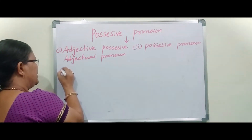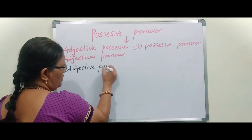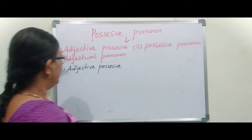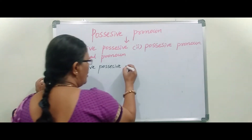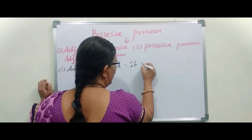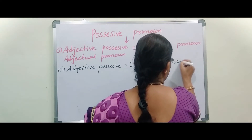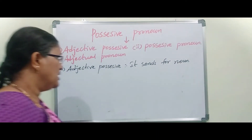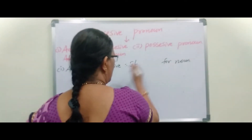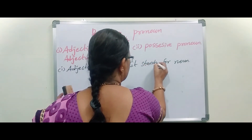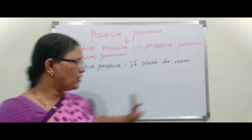Let us look at the first one: Adjective Possessive. Adjective Possessive, or Adjectual Pronoun, it stands for a noun. It stands for a noun — that is the key characteristic. Let's see an example.